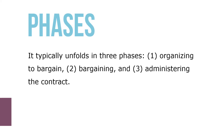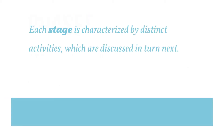Collective bargaining typically unfolds in three phases. First, organizing to bargain. Second, bargaining. And third, administering the contract. Each stage is characterized by distinct activities, which are discussed in turn in future courses.